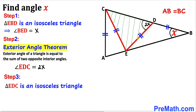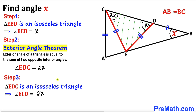Now let's focus on triangle EDC. We know that this is an isosceles triangle since this side length equals this one. If this angle is 2X, this angle has got to be 2X as well. So therefore angle ECD turns out to be 2X.